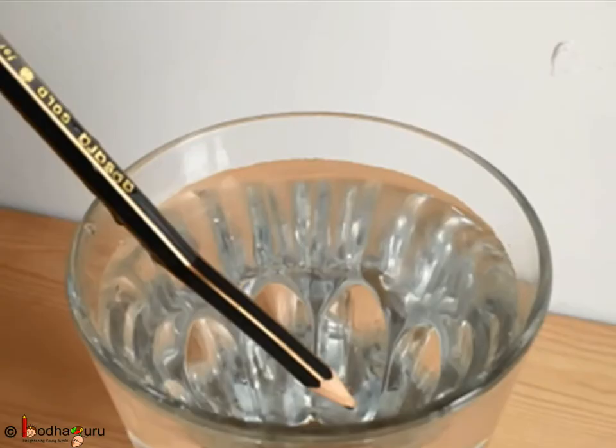If we put a pencil in a jar of water and look at the tip of the pencil from the top, it would appear as if the pencil has bent after it entered inside the water. Why?